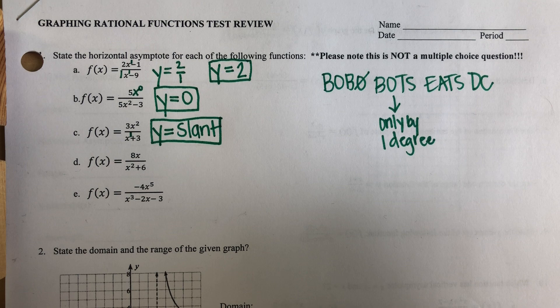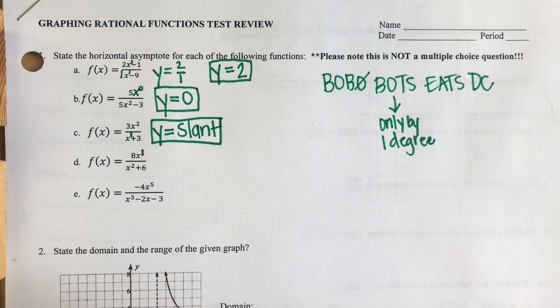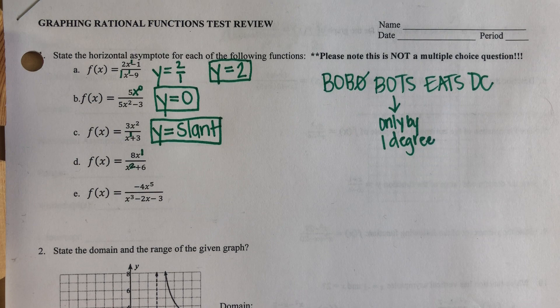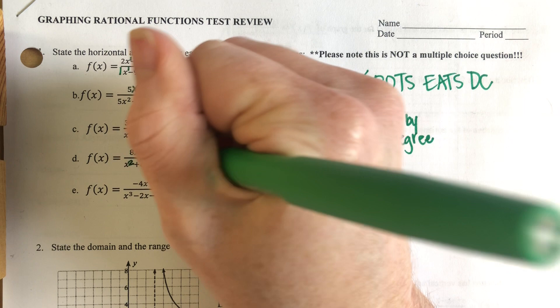D — my exponent in the numerator is one, my exponent in the denominator is two. I see that it is bigger on the bottom, so again I have Y equals zero.